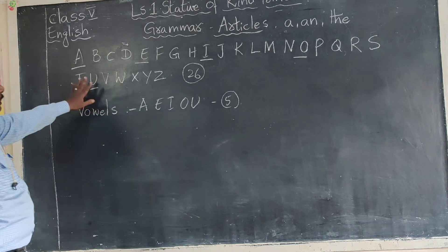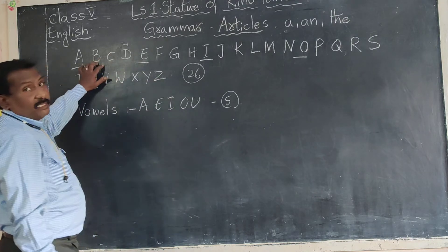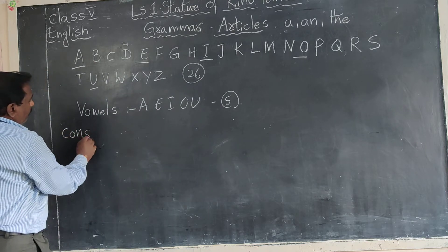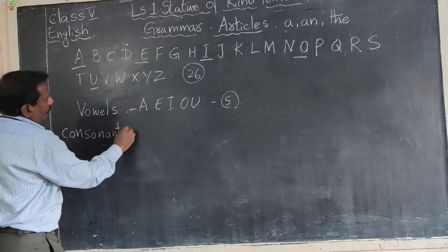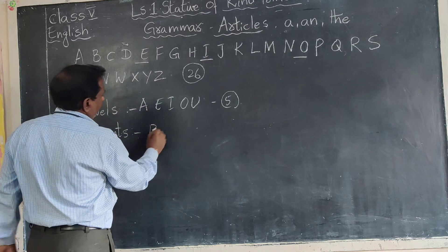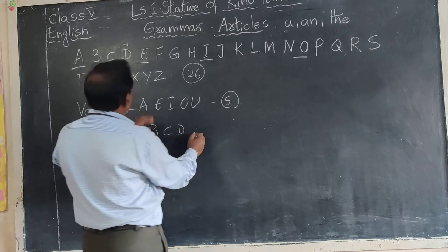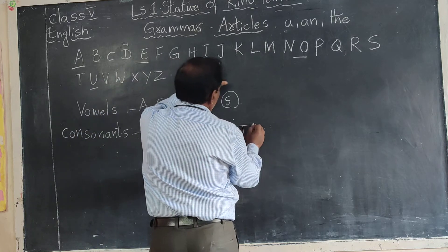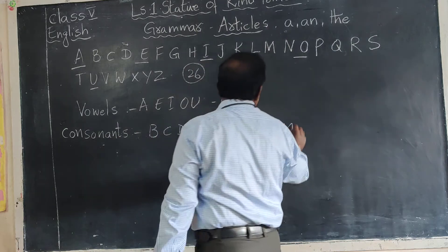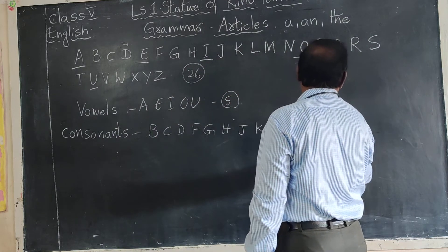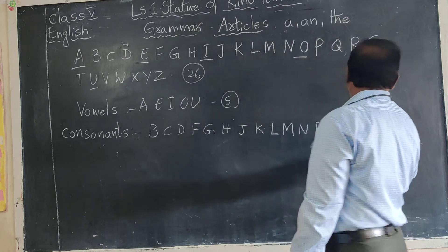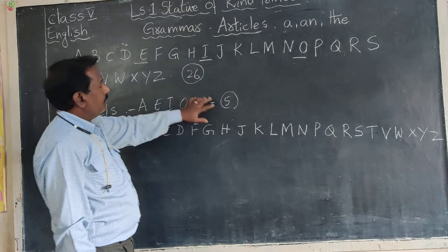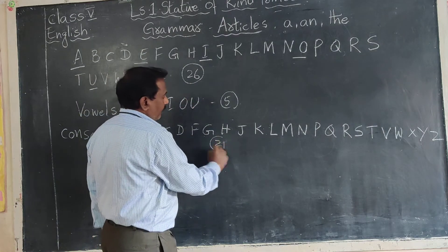Rest of the letters, other than A, E, I, O, U, we call consonants. B, C, D, F, G, H, J, K, L, M, N, P, Q, R, S, T, V, W, X, Y, Z. So vowels are five. Rest twenty-six minus five, twenty-one. These are the twenty-one consonants.